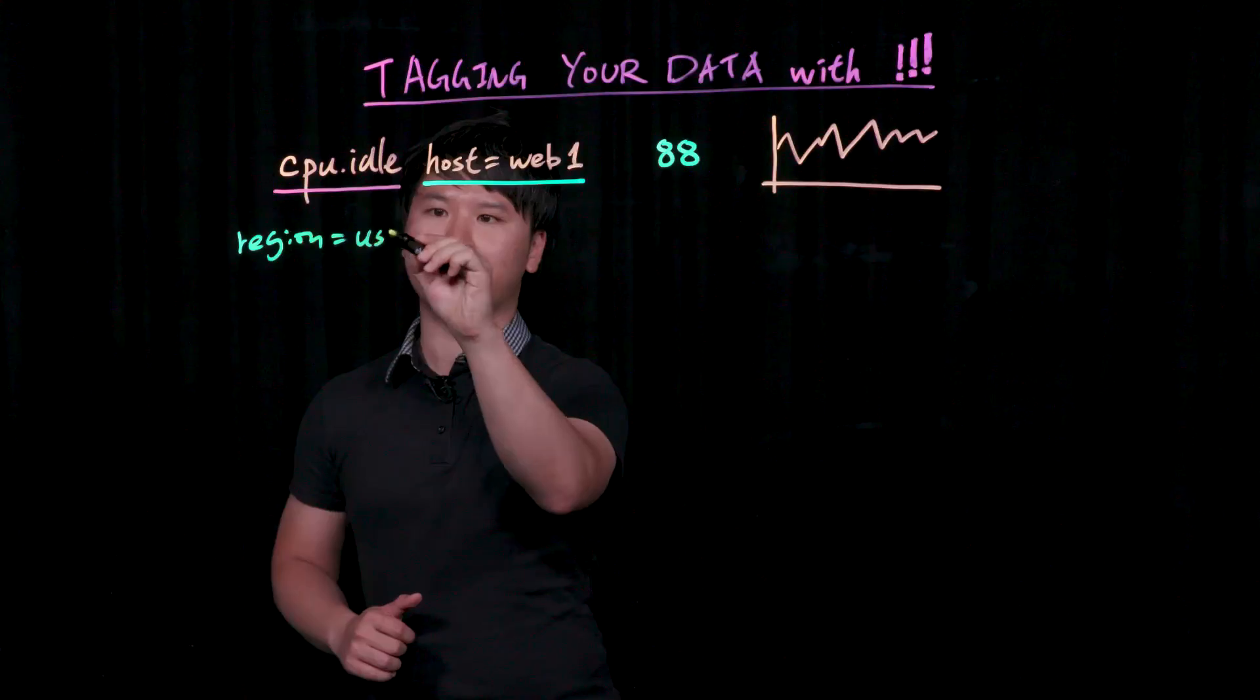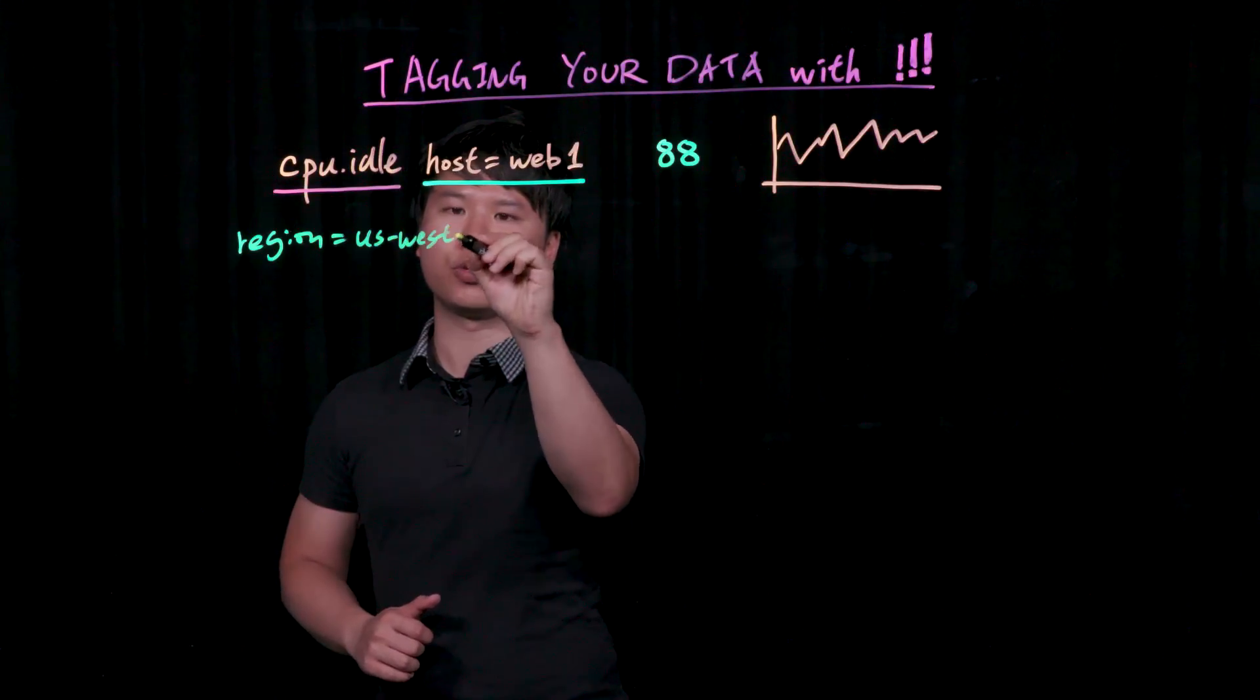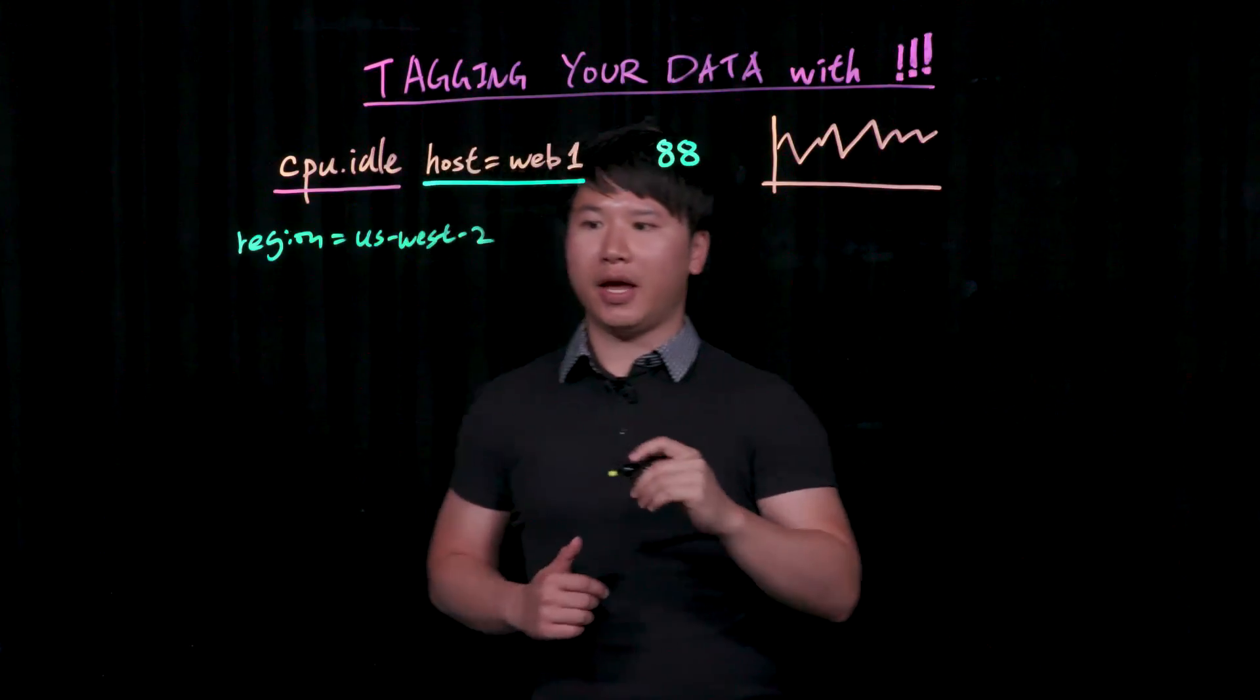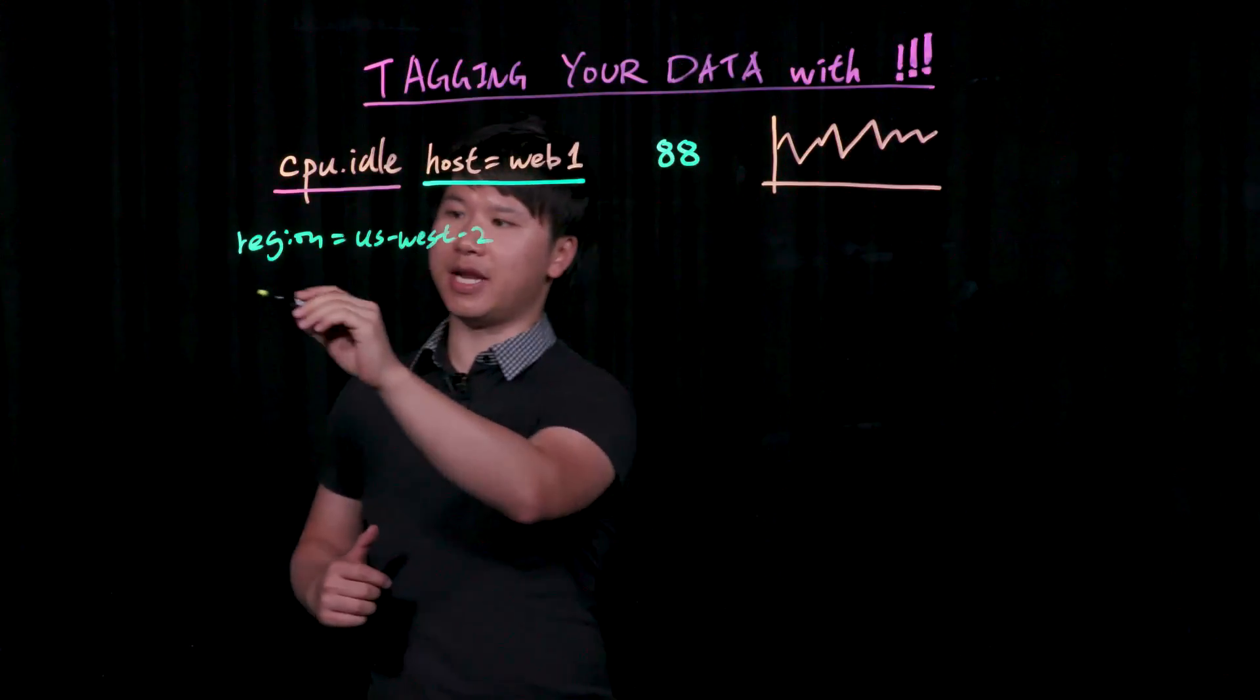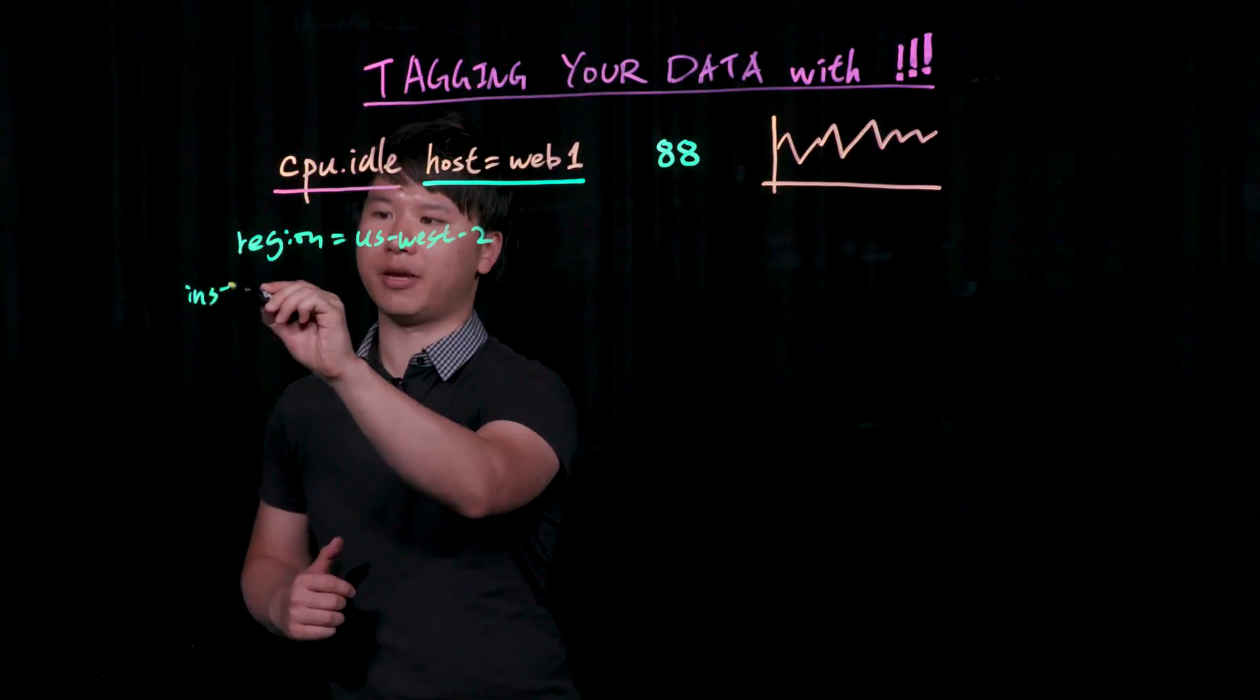In this particular example, let's say it is coming from US West 2, which is Oregon. And perhaps it would have the instance name itself or the instance type.